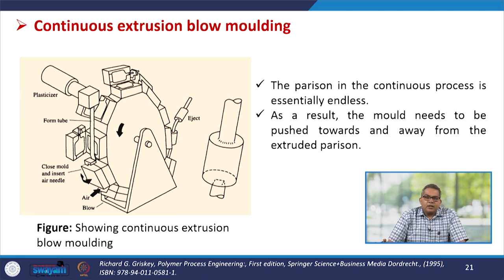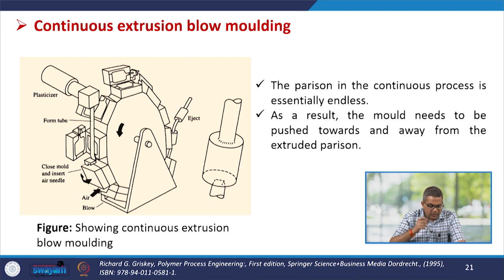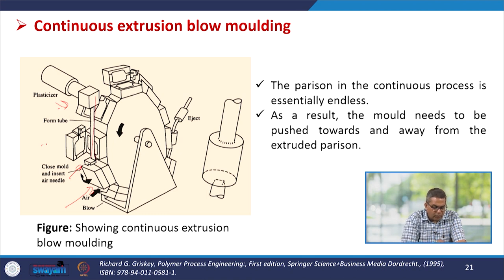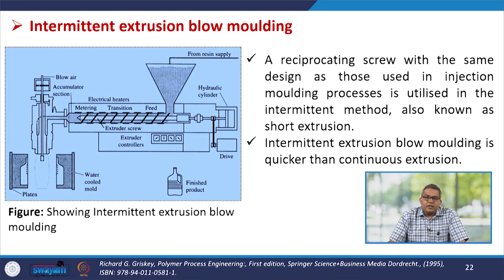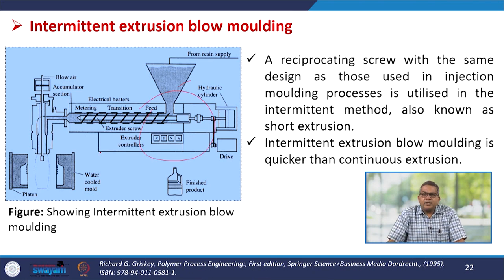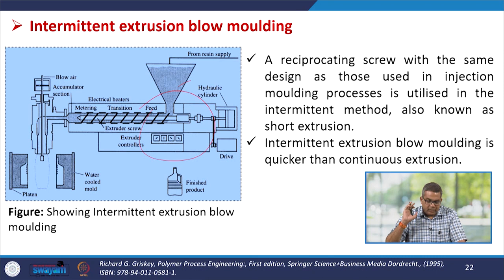Extrusion blow moulding can be used continuously or intermittently. In continuous extrusion blow moulding, the parison is essentially endless, so the mould needs to be pushed towards and away from the extruded parison. In intermittent extrusion blow moulding, a reciprocating screw — of the same design as used in injection moulding — is used; this is known as shot extrusion. Intermittent extrusion blow moulding is quicker than the continuous operation.